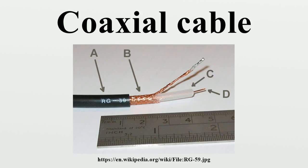Such reflections may cause signal attenuation and ghosting in TV picture display. Multiple reflections may cause the original signal to be followed by more than one echo. In analog video or TV systems, this causes ghosting in the image. Reflections also introduce standing waves, which cause increased losses and can even result in cable dielectric breakdown with high power transmission. If a coaxial cable is open, the termination has nearly infinite resistance, causing reflections. If the coaxial cable is short-circuited, the termination resistance is nearly zero and there will be reflections with the opposite polarity. Reflection will be nearly eliminated if the coaxial cable is terminated in a pure resistance equal to its impedance.